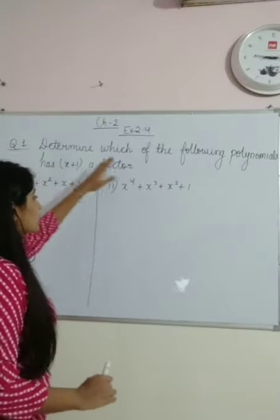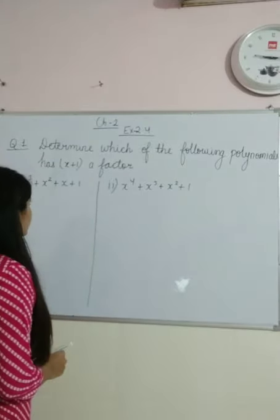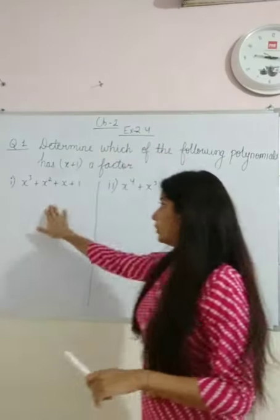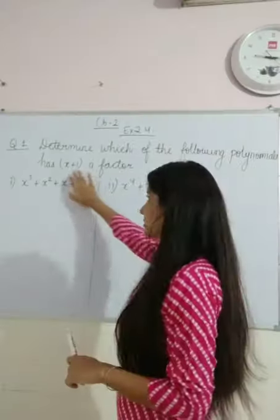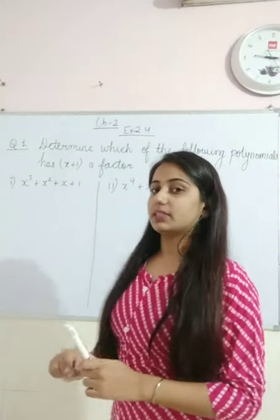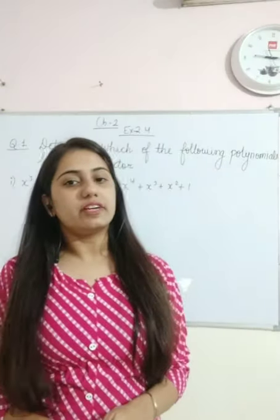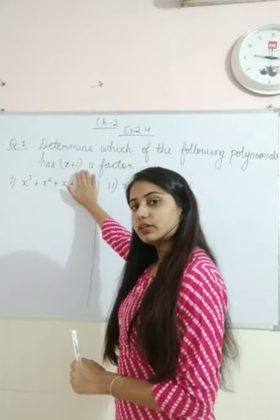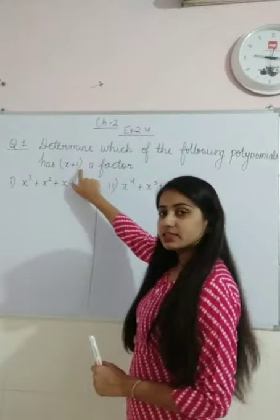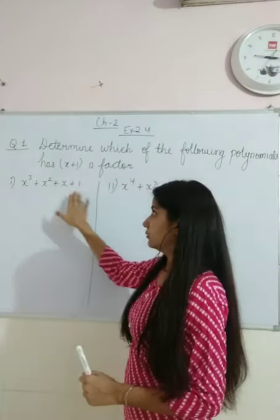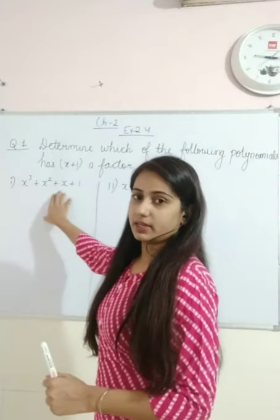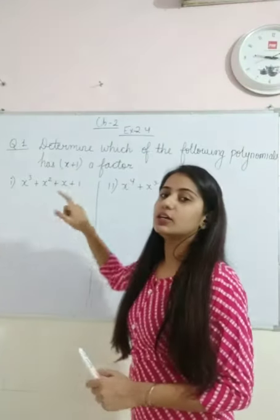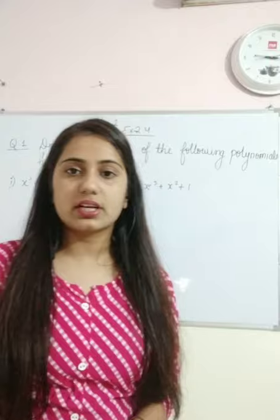The first question is: determine which of the following polynomials has (x+1) as a factor — meaning, from the given polynomials, which one has (x+1) as a factor. To find out, we put x+1 equal to 0, so x equals minus 1. When we substitute x = -1 and the answer is 0, then x+1 will be a factor.